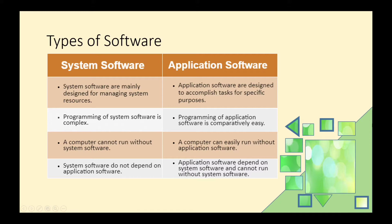There are two types of software: system software and application software. The key difference is that system software manages system resources while application software is designed to accomplish tasks for specific purposes.